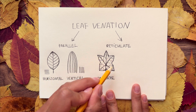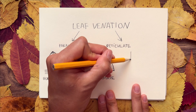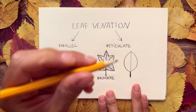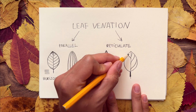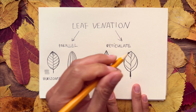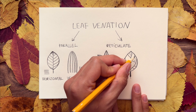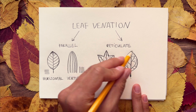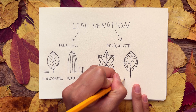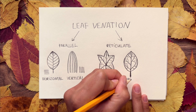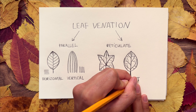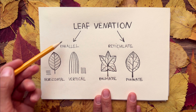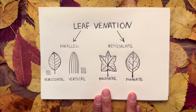The next common reticulate type is a bit different. At first glance it might look like the horizontal veins we saw before, but the key difference is that smaller veins branch out from the main veins into many tiny veins, creating a complex network. This type is called pinnate — imagine a central midrib with lots of smaller veins spreading out like a feather. So overall we have four main venation types.